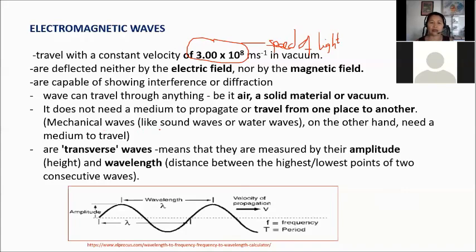Unlike mechanical waves — such as sound waves and water waves — which need a medium to travel, electromagnetic waves require no medium. Sound waves need air as their medium; water waves need water. The medium for mechanical waves could be solid, liquid, or gas, but electromagnetic waves need no medium at all to travel from one place to another. Electromagnetic waves are transverse waves — recalling the two kinds of mechanical waves: longitudinal and transverse — EM waves fall under transverse waves.